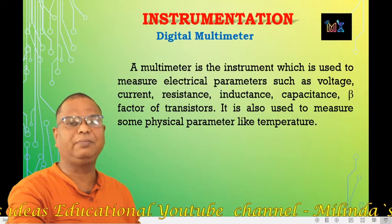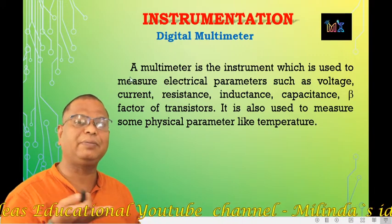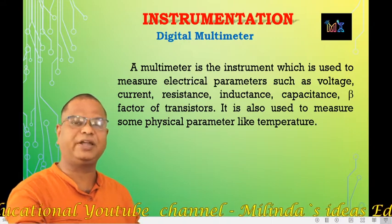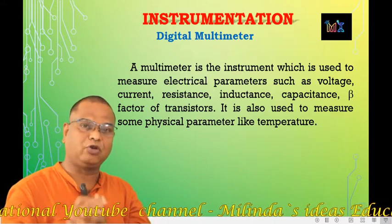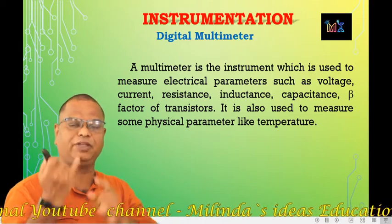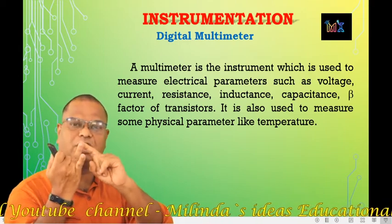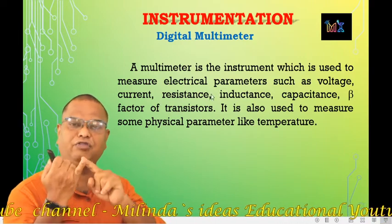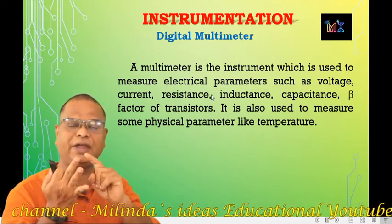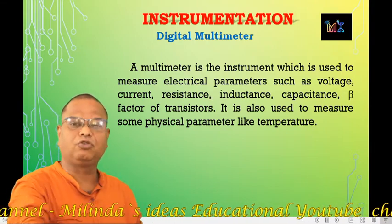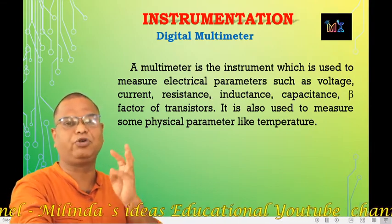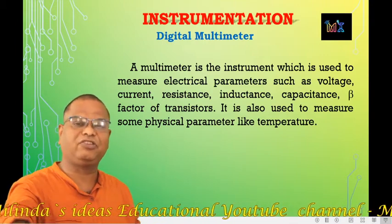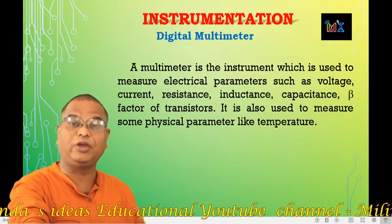A multimeter is used to measure multiple parameters. It is used in electronics laboratories and is also known as a VOM meter — V for voltage, O for ohm, and M for milliampere (current). It is primarily used to measure voltage, current, and resistance.